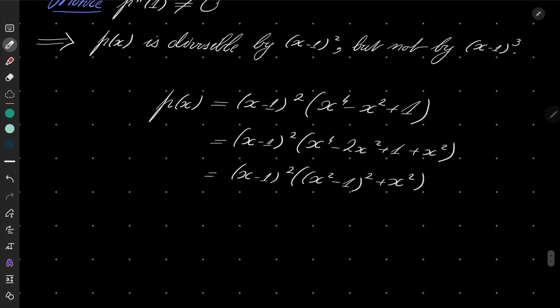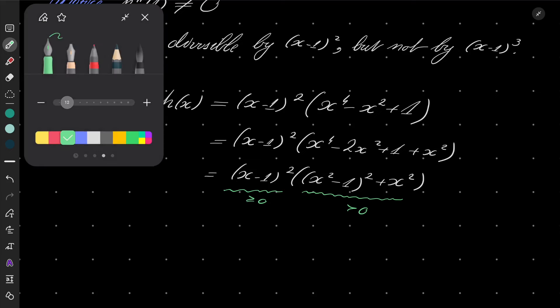And now let's notice that my first factor is obviously non-negative because it's a square. Well, and this parenthesis is always positive. Why is that? Because we have a sum of two different squares.